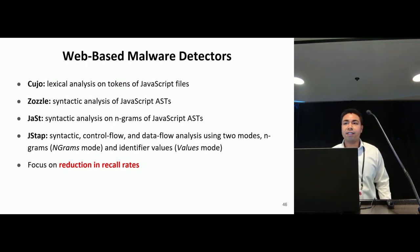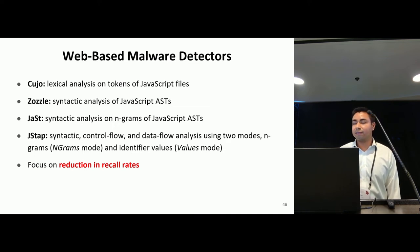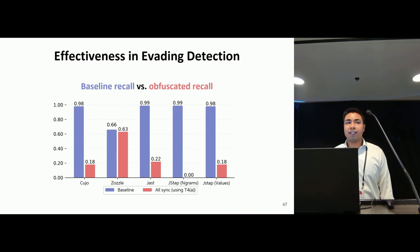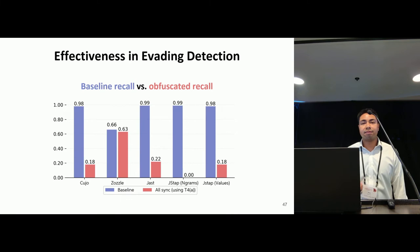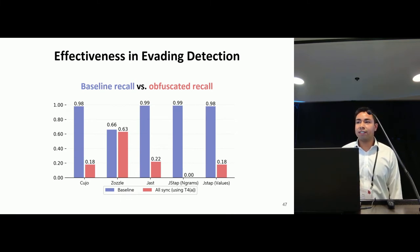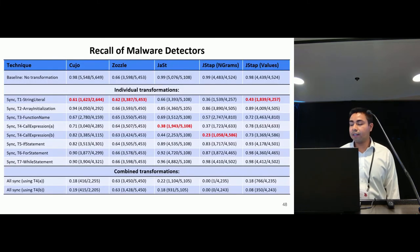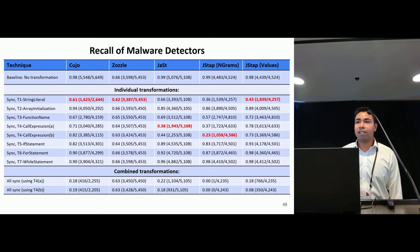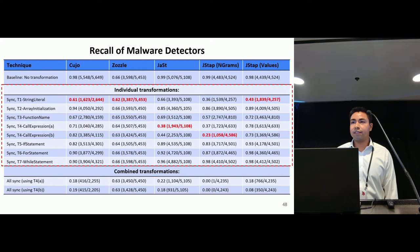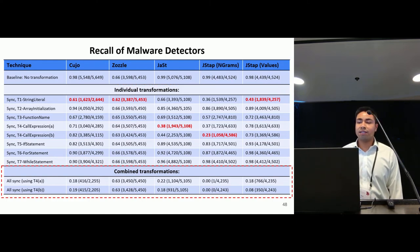Since WafiSkater aims to reduce the ability of these detectors to detect malicious samples, we focus on the reduction in recall rates. This figure shows how WafiSkater affects the recall of each detector. The purple bars show the detector's recall on the unobfuscated dataset, which serves as our baseline. The red bars show the detector's recall after applying our obfuscations, using all seven transformations with T4A. As we can see, WafiSkater greatly reduces the recall on most detectors. We also show recall under different configurations, with individual transformations and then combinations of transformations.